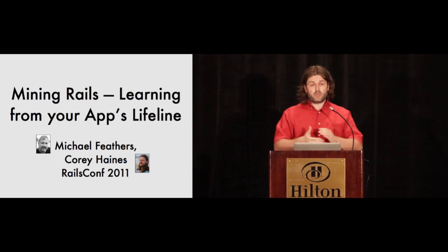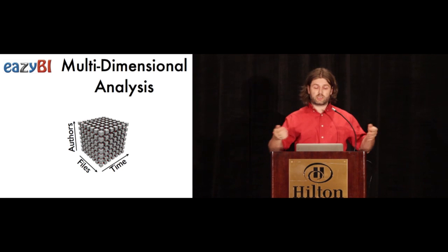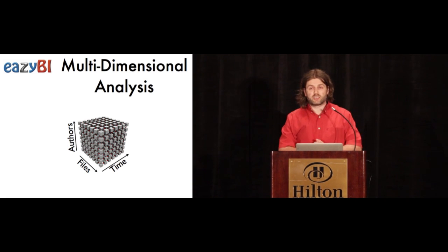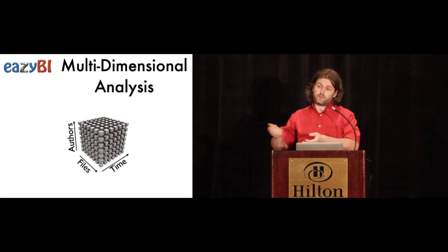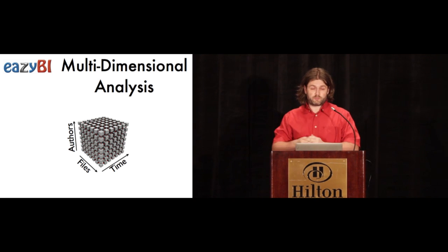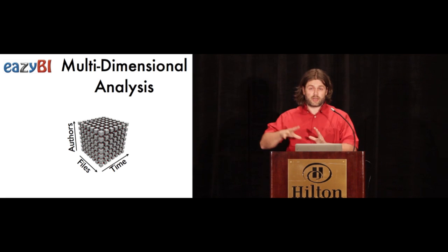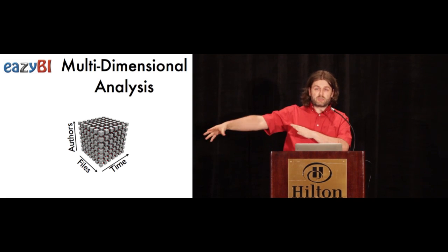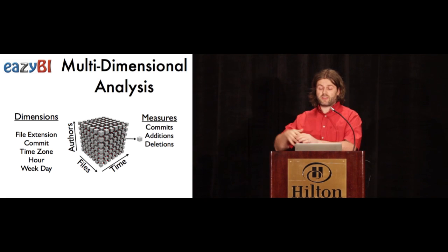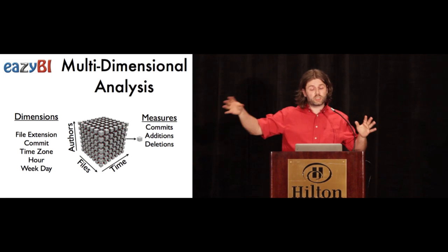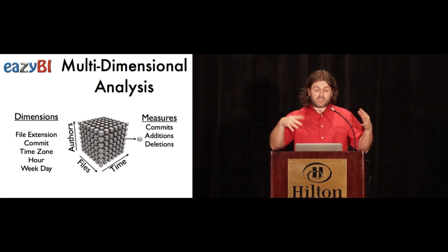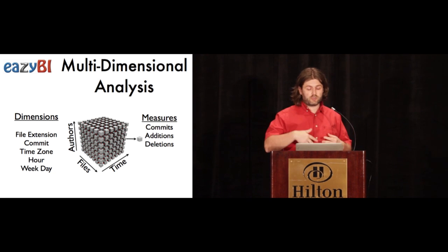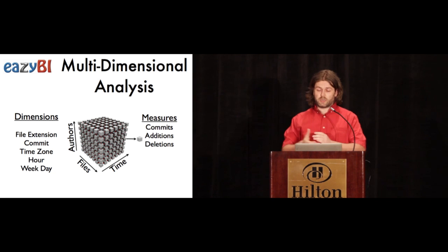So as I'm working on a data analysis tool, EasyBI, which does multi-dimensional analysis, I thought that I could apply to that. In terms of Git log, you can analyze it by author's dimension, file's dimension, time's dimension, how it changes over time, and then you can analyze number of commits, additions, deletions, as well as analyze by some additional dimensions like hour of the day or weekday when you created some commit.